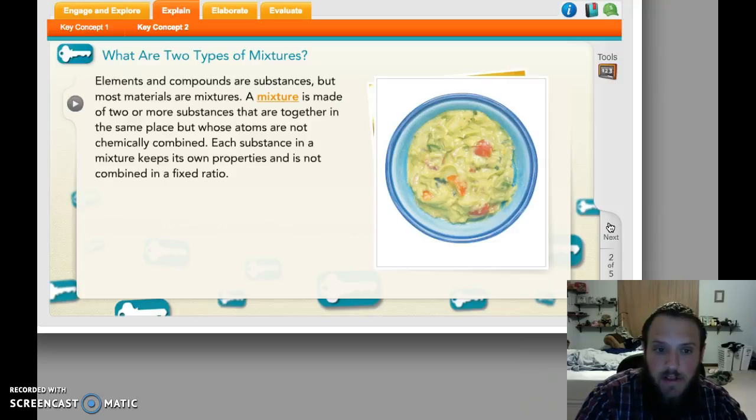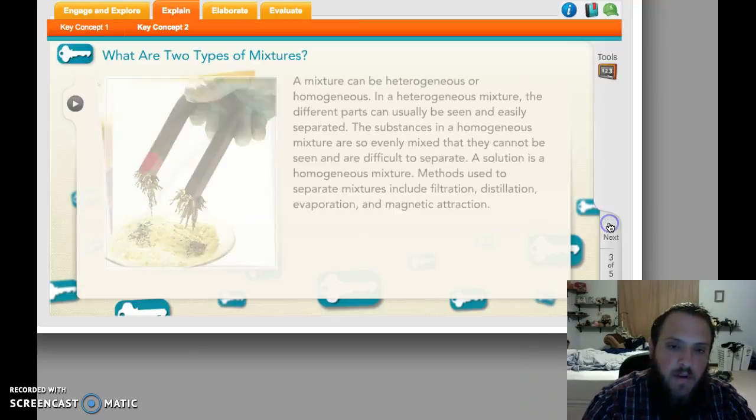When we draw them, they're not touching. Each substance in the mixture has its own properties, but they can be separated. Each substance in the mixture has its own properties, but it's not necessarily the same, it's not necessarily built to the same stuff all the way through. What do I mean by that? We'll talk about it.